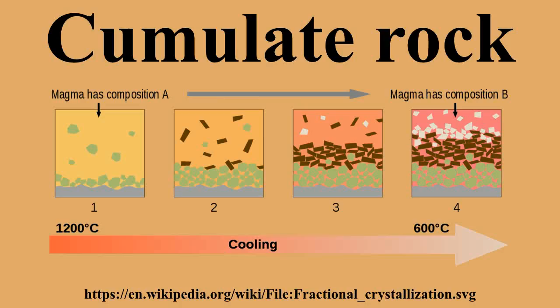The rock made of the accumulated minerals will not have the same composition as the magma. The cumulate of anorthite plus enstatite is rich in calcium and magnesium, while the melt is depleted in calcium and magnesium. The cumulate rock is a plagioclase-pyroxene cumulate and the melt is now more felsic and aluminous in composition.